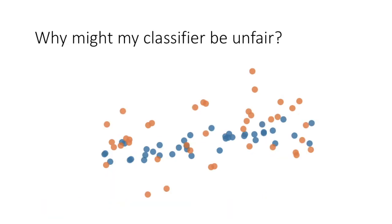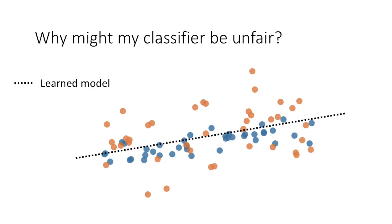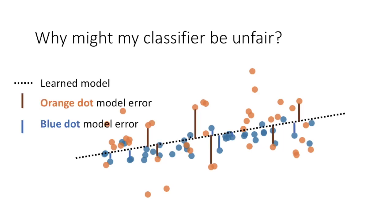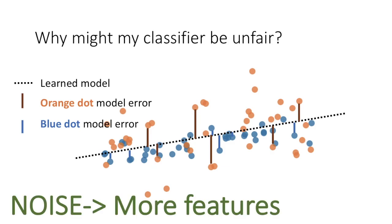Lastly, we see data from two groups. But now, no matter what model we choose, the average error for the orange dots compared to the average error for the blue dots will always be higher. The orange group is simply harder to predict, even with the best model and infinite data. We call this error due to noise, and we would recommend collecting more features.